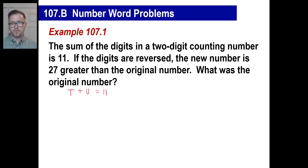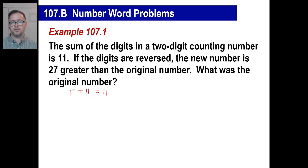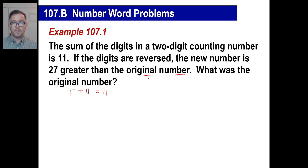'If the digits are reversed, the new number is 27 greater than the original number.' Here's how you always set up the second equation. The digits add up — you write that as T plus U. Now for the second one: the original number, if somebody said to you 64, you'd break that up as six tens plus four units — six times ten and four times the unit. So the original number is always 10 times T plus one times U.